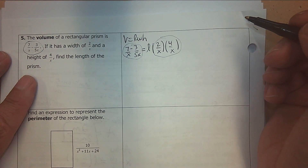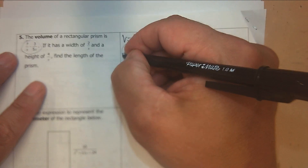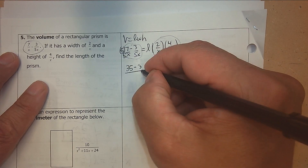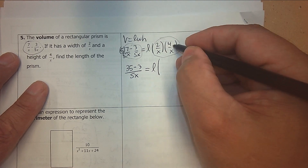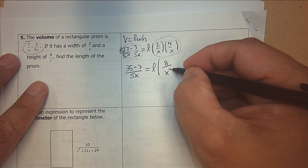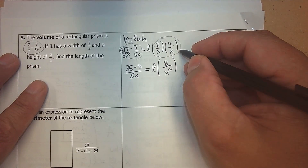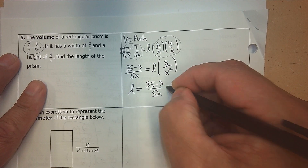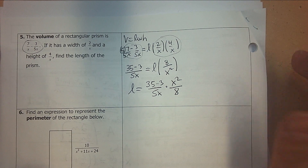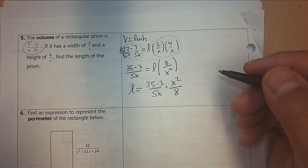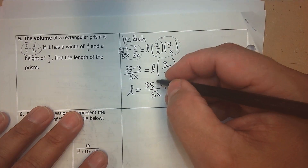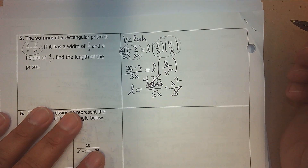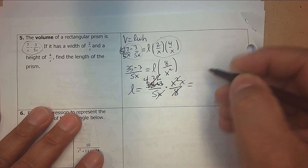To write this as one fraction I need common denominators. Multiplying top and bottom times 5 gives 35 subtract 3 all over 5x. And 2 times 4 is 8, x times x is x squared. There's nothing to simplify, so multiply tops and bottoms. Then divide — multiply by the reciprocal, dividing by 8 over x squared. 35 take away 3 is 32. 8 goes into 32 four times. x makes x squared an x. So what's left is 4x over 5.